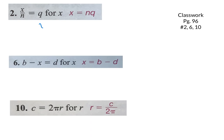Let's look at the first one together. We have X over N equals Q. They want us to get X by itself. What is happening between the X and the N? Division. So what is my inverse operation? I need to multiply both sides by N. They put it in alphabetical order, which is what you'll typically see, so that's why they have X equals N times Q.